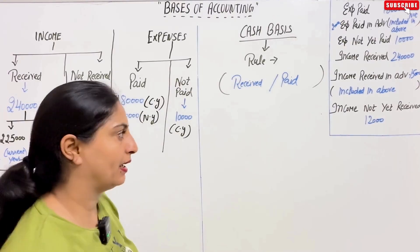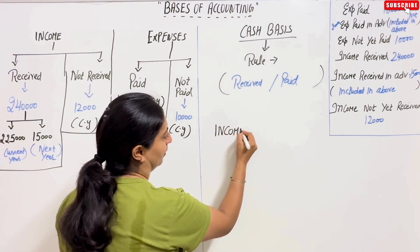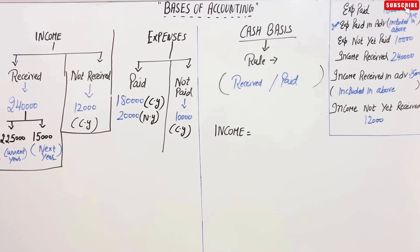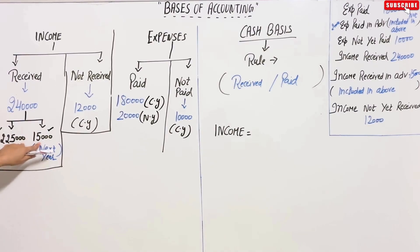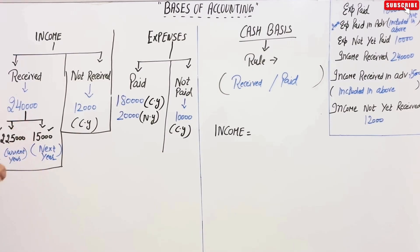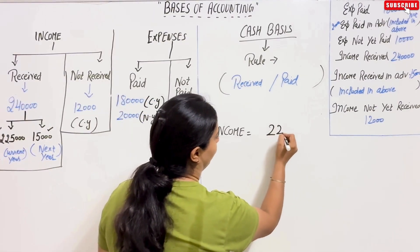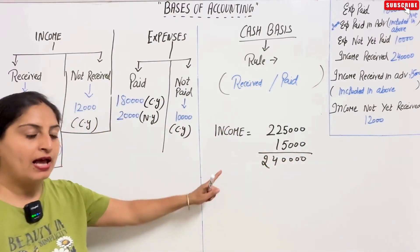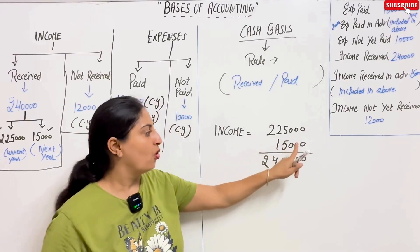For net income under cash basis, we take income received. The received amount has two parts: two lakh twenty-five thousand (current year portion) and fifteen thousand (next year portion — advance). Total income received is two lakh forty thousand. Where year mentions exist in the received column, we take those amounts. Two lakh twenty-five thousand plus fifteen thousand equals two lakh forty thousand.